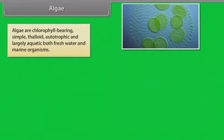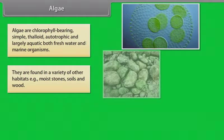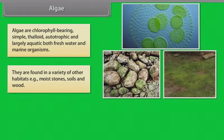Algae. Algae are chlorophyll bearing, simple, thalloid, autotrophic and largely aquatic both freshwater and marine organisms. They are found in a variety of other habitats as well. Example: moist stones, soils and wood.